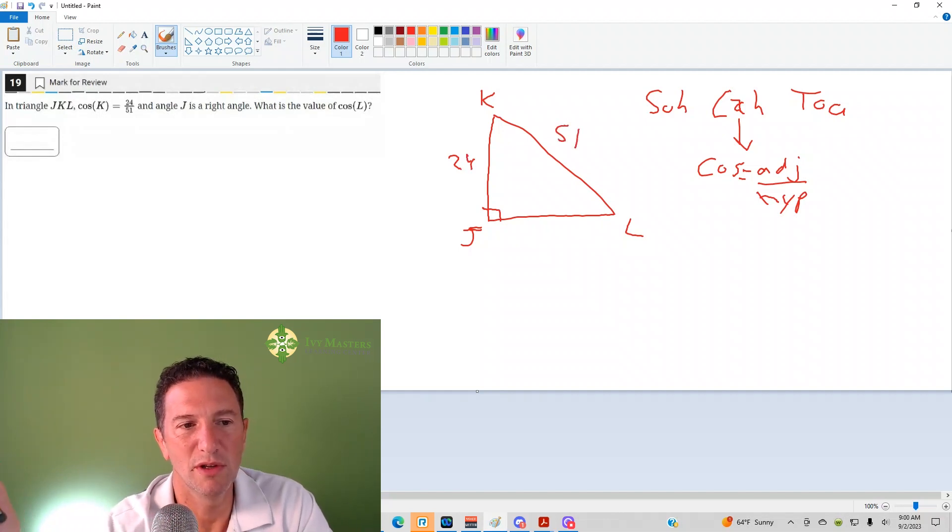So now, if we're looking at cosine of L, we need adjacent over hypotenuse. We don't know what that angle is over there, so how are we going to figure it out? Anytime you have two sides of a triangle, find a third side, you use the Pythagorean theorem.